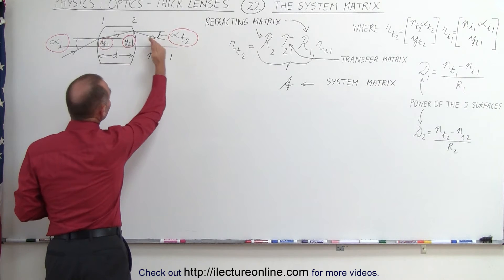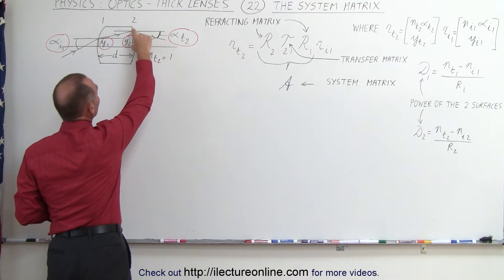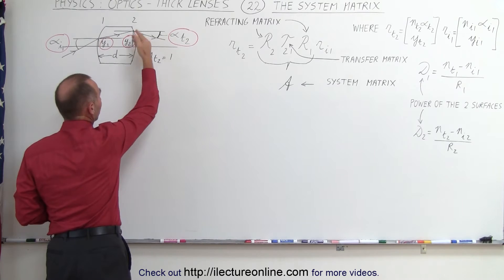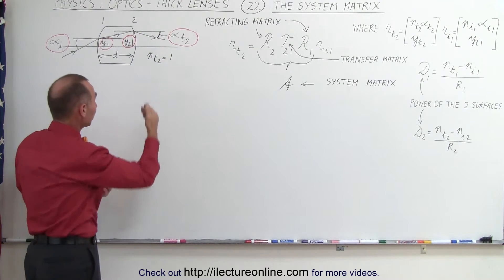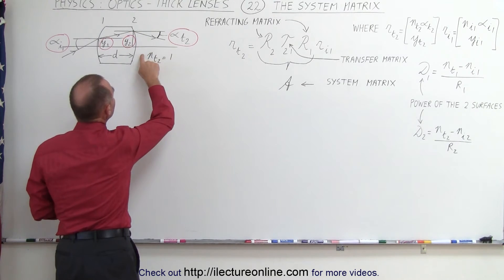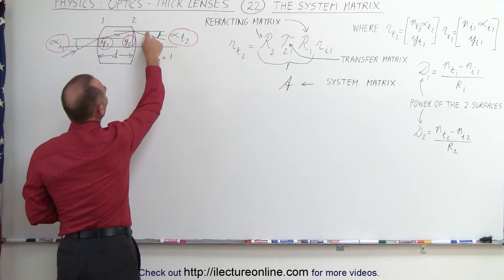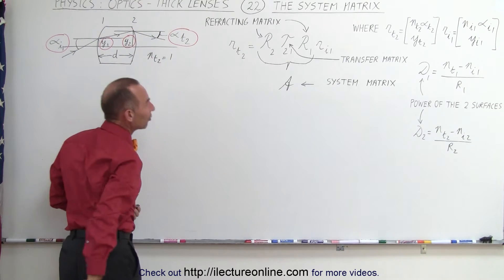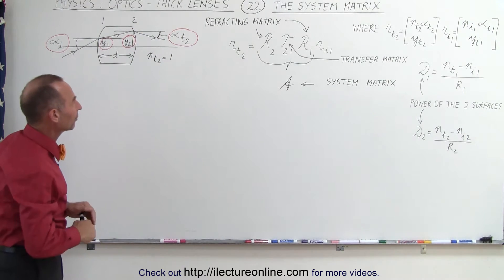What we're trying to find is the information about the ray as it exits the thick lens, which includes the distance away from the optical axis, which, by the way, could be negative. In this case, it's drawn as a positive quantity. And the angle relative to the horizontal as it transitions through the second boundary of the lens.